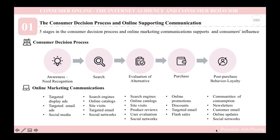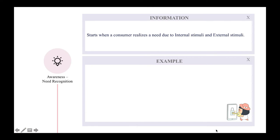Let's get started with the first part of our presentation: the consumer decision process and online supporting communication, which belongs to part 6.1 — consumer online, the internet audience, and consumer behavior. There are five stages in the consumer decision process, and online marketing communication supports this process by seeking to influence the consumer before, during, and after the purchase decision.